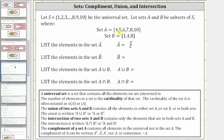Because set A contains the elements four, five, six, seven, eight, 10, and A complement is the set of elements not in set A, A complement contains the elements one, two, three, and nine. These are the elements in the universal set not in set A. This is the set A complement.